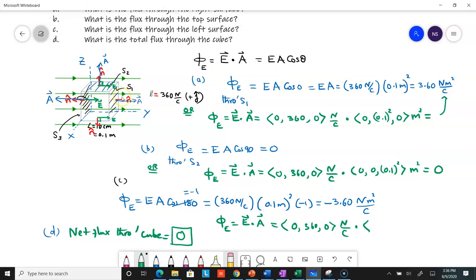So you would have (0, -0.1 squared, 0) square meters. That will give you the exact same thing that you have.